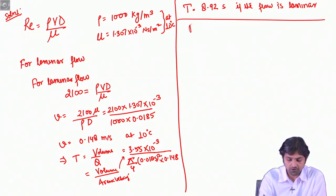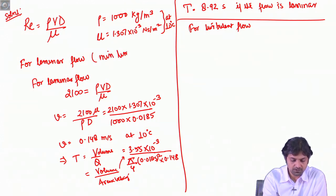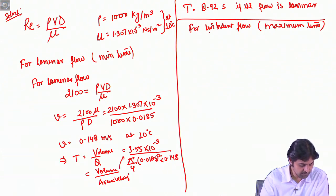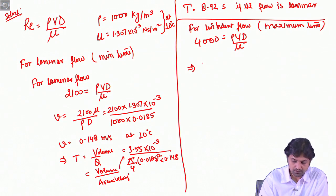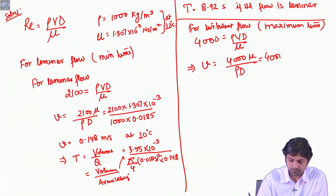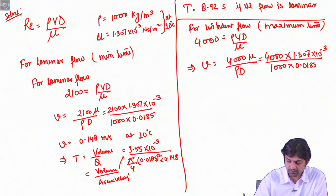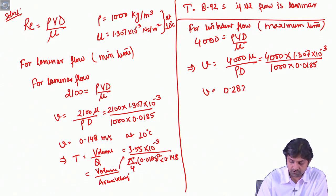For turbulent flow maximum time, we write: 4000 = rho × V × d / mu, or velocity = 4000 × mu / (rho × d). So velocity = 4000 × 1.307 × 10⁻³ divided by 1000 × 0.0185, which gives us a velocity of 0.282 m/s.